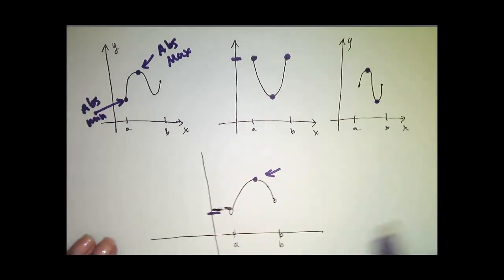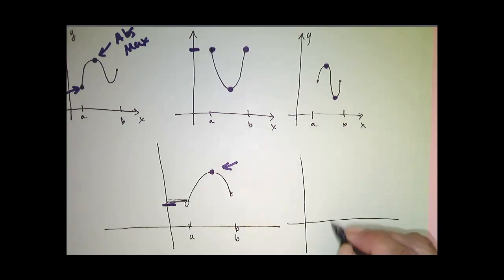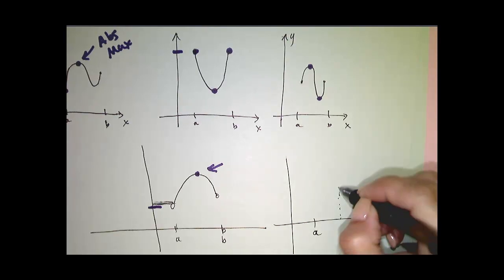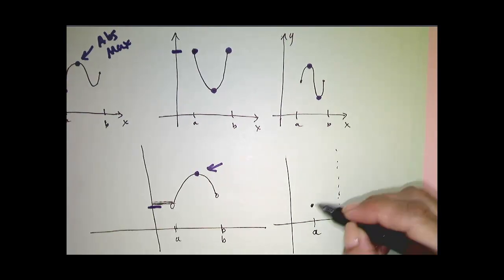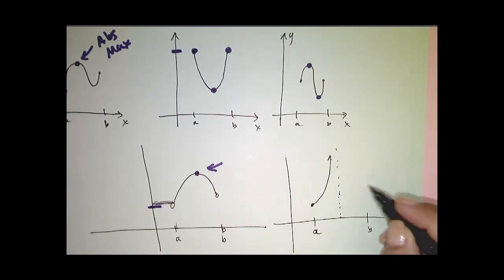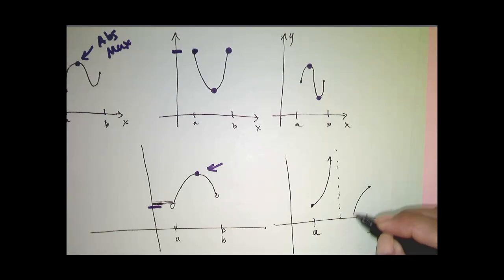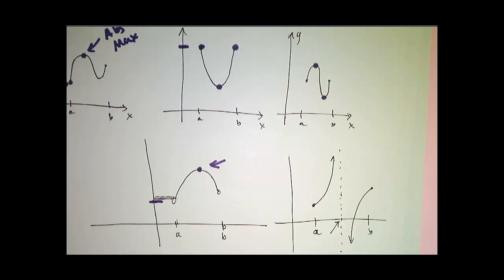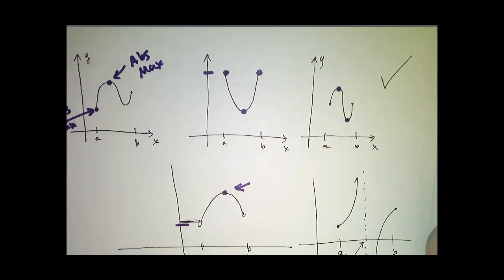Now let's put it back to a closed interval, a to b, but this time we will remove continuity. Perhaps I'm going to have an asymptote right here, so maybe I'm defined this way and then that way. As you can see from this picture, I am defined on the closed interval, except not at this value right here, and my function is not continuous. So here I don't have an absolute maximum or an absolute minimum. If these conditions are met, I will have an absolute maximum, and if they're not, then I don't necessarily have one.